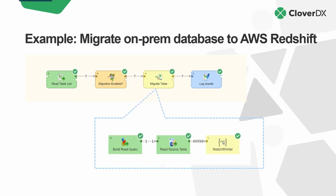The actual migration itself, when we get to an individual table, we do this process. We read from the source table — actually, we dynamically build the query because this is generic and will work for any table. We build the query we need to read dynamically, then we actually read it, and then we write to Redshift using this little squirrely bracket here. This is actually a Clover subgraph which is optimized for writing to Redshift. In this case, we had 50,000 records that we needed to push into our Redshift table, and we want to do that as a bulk process.